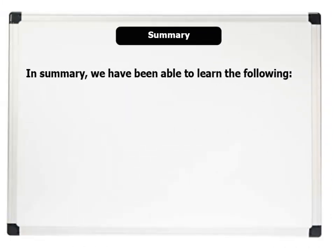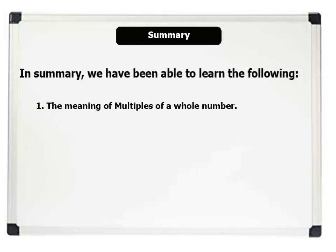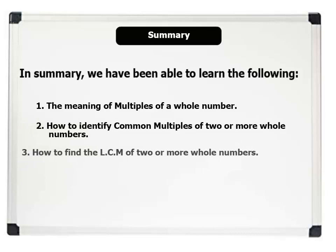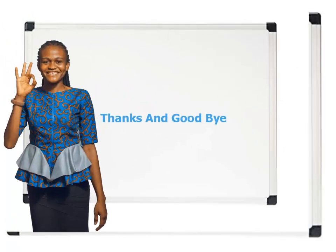In summary, we have been able to learn the following in this lesson: 1. The meaning of multiples of a whole number. 2. How to identify common multiples of two or more whole numbers. 3. How to find the LCM of two or more whole numbers. I hope you enjoyed the class. See you in the next lesson. Thanks and goodbye.